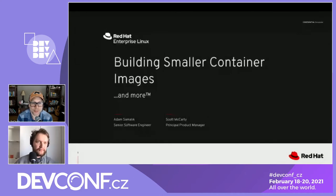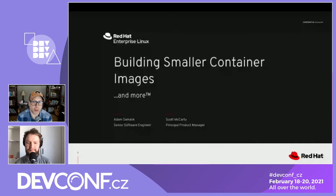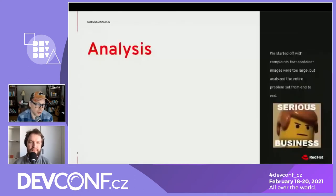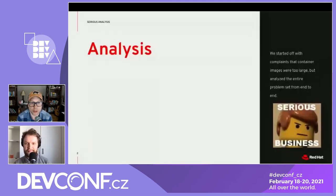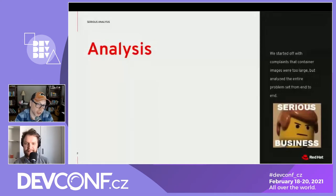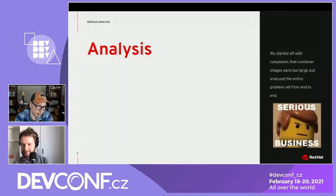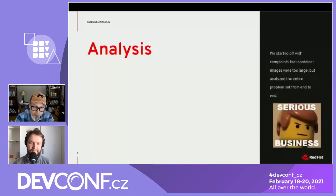We'll go through the why, the what, and the how in this talk on building smaller container images. Over the last seven-ish years I've been talking to users at conferences and customers, and one of the resounding themes is: I want smaller images, why are these images too large, how do I make them smaller? Over the last 18 months, especially working with Adam, we've finally found some really interesting techniques to make container images smaller while still retaining all the advantages of using a Linux distro.